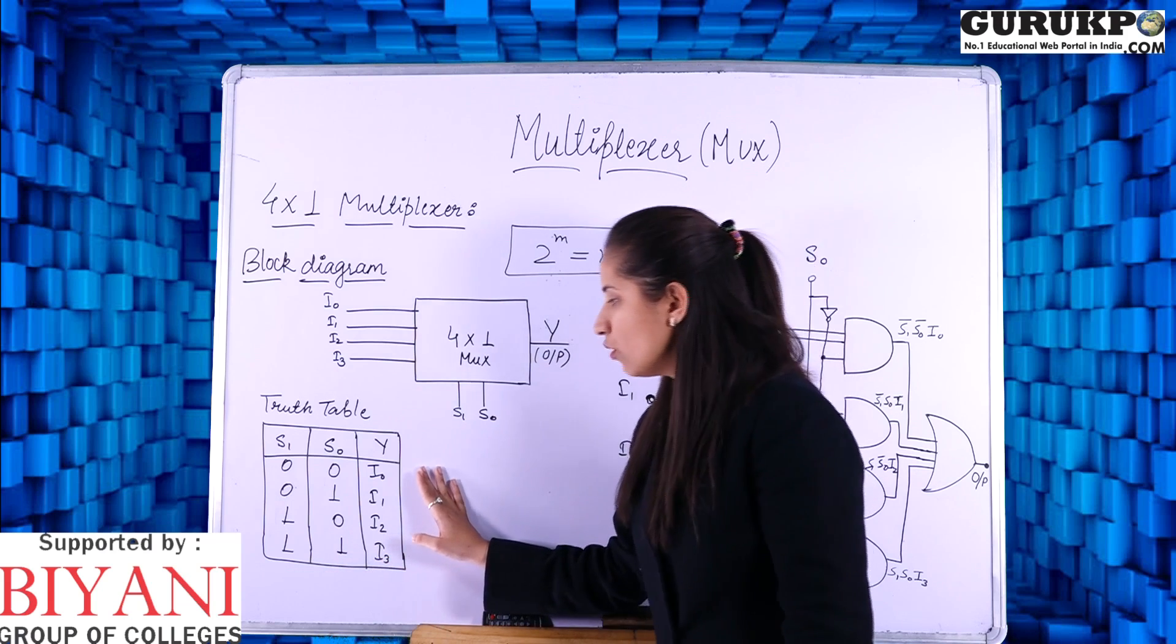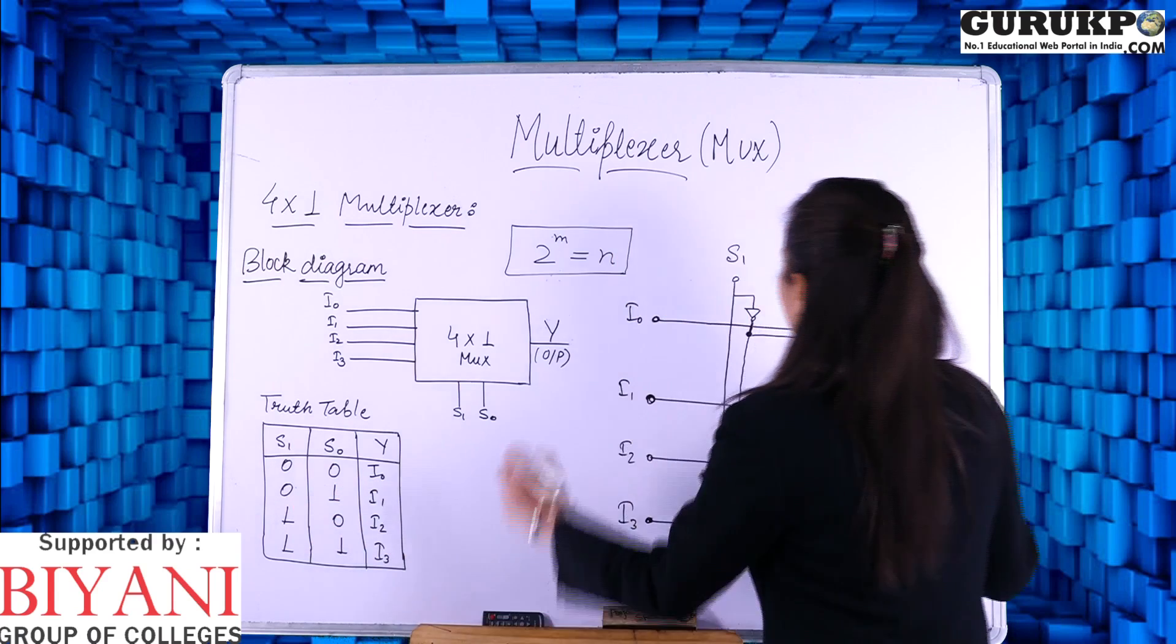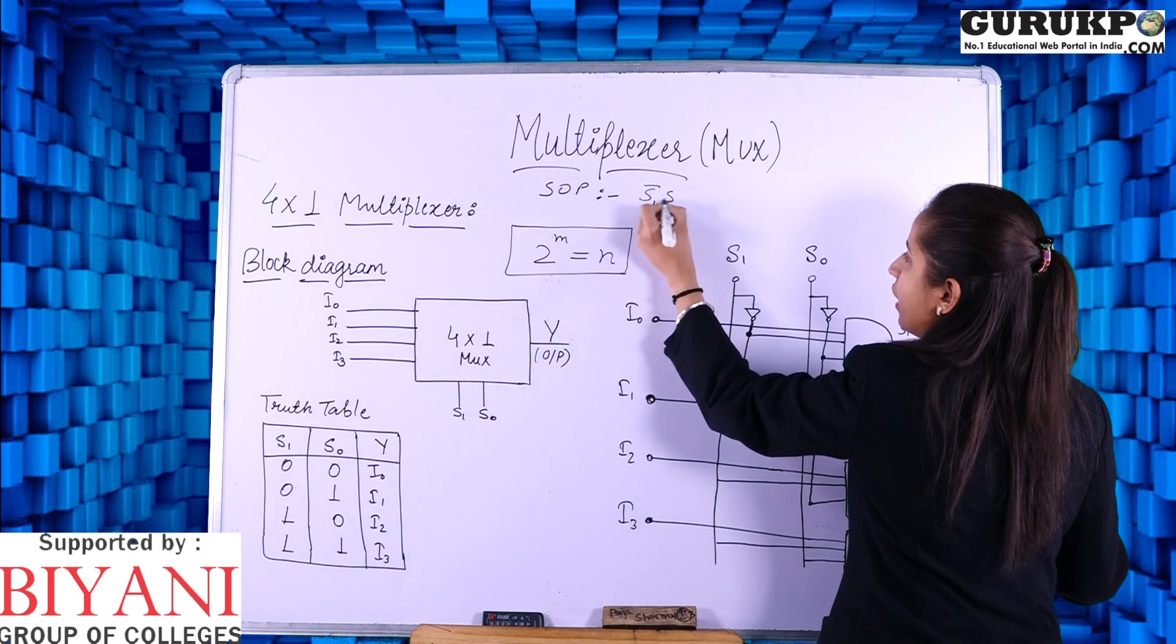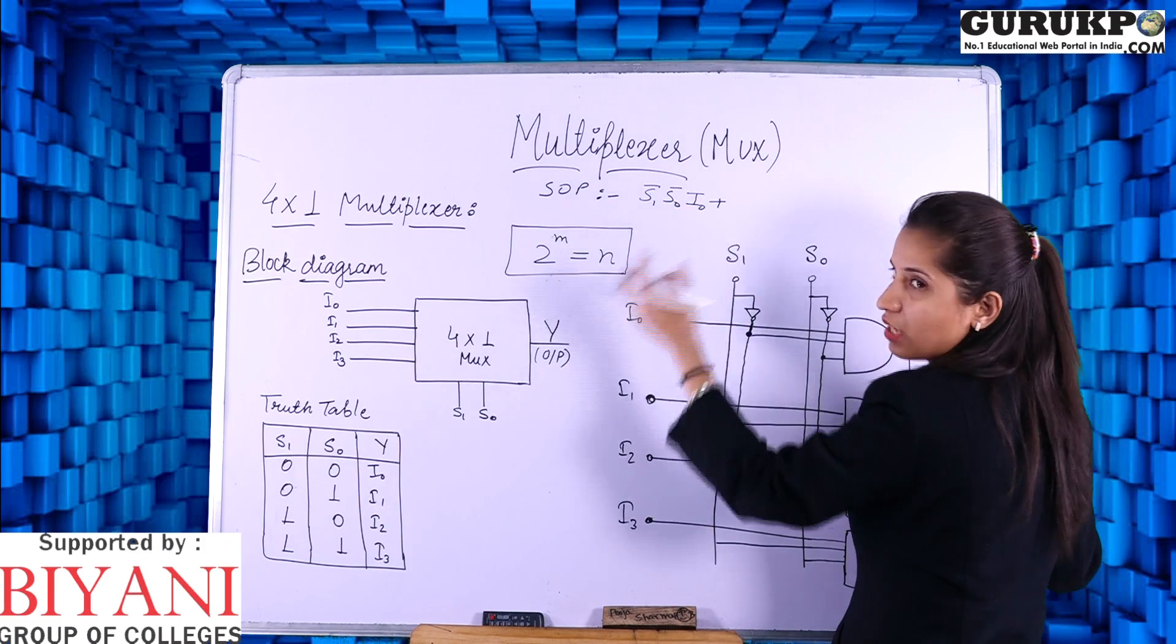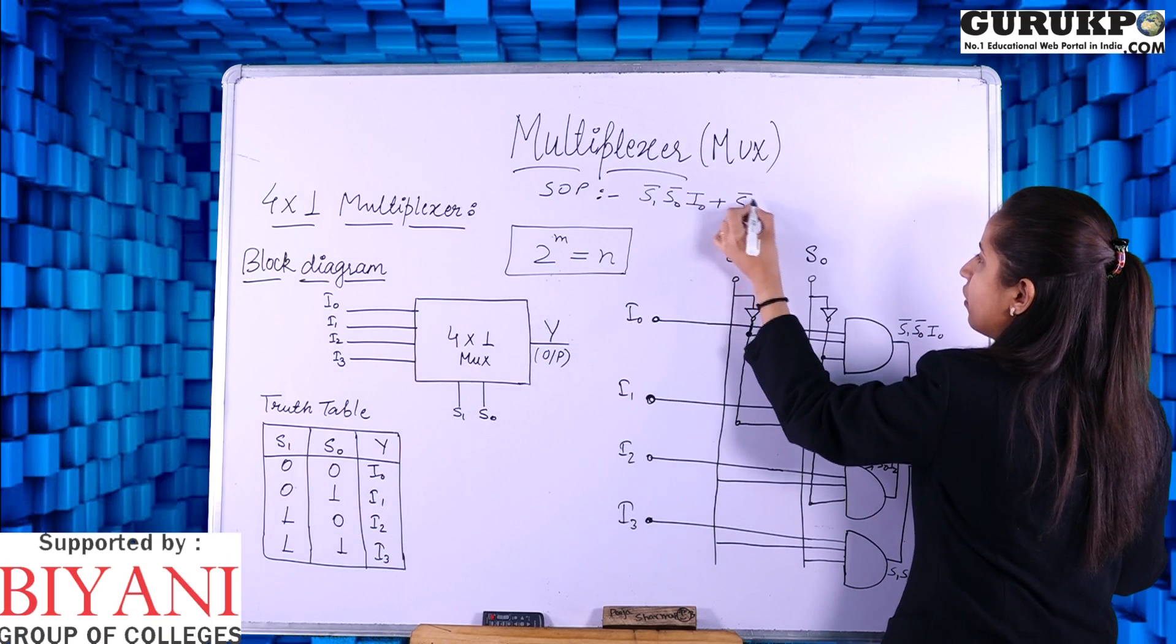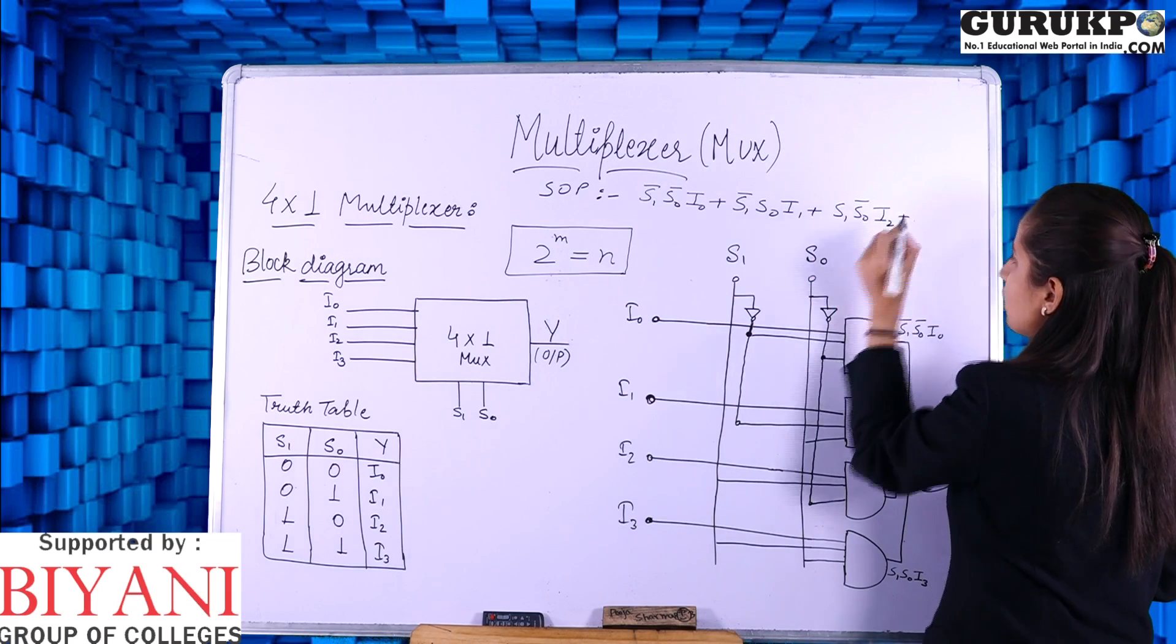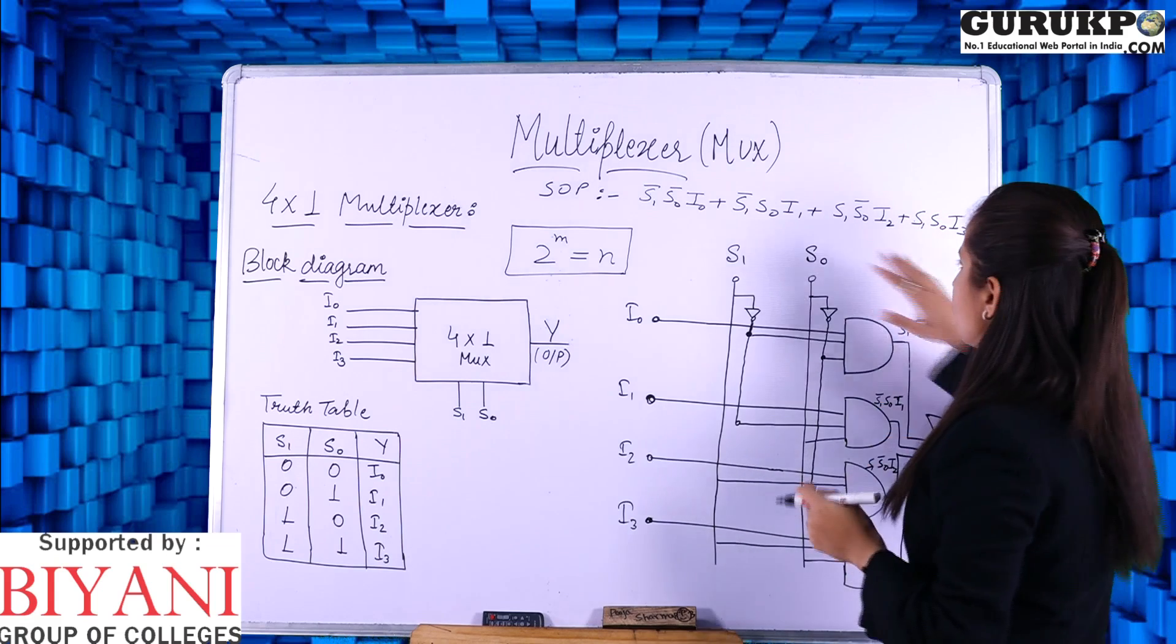You will write it in SOP form. As we know in SOP form 1 is considered as A and 0 is considered as A bar. SOP form for this using the truth table: S1 and S0 both are 0, so it will be S1 bar S0 bar I0 plus, as I am using the SOP form it is the sum of products. Next is 0, 1, so it will be S1 bar S0 I1 plus similarly we have S1 S0 bar I2 plus both are 1, so it will be S1 S0 I3. This is the SOP form.